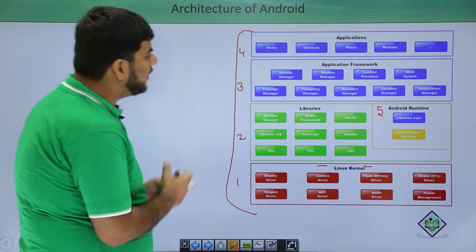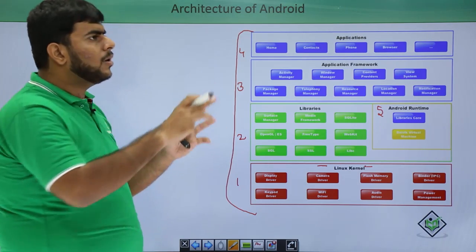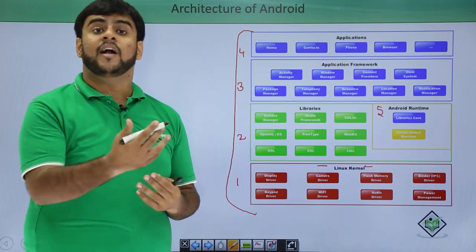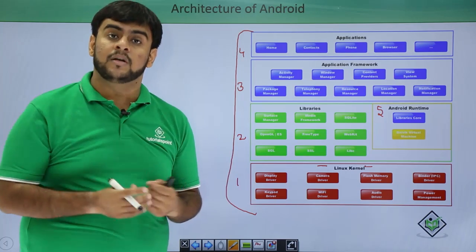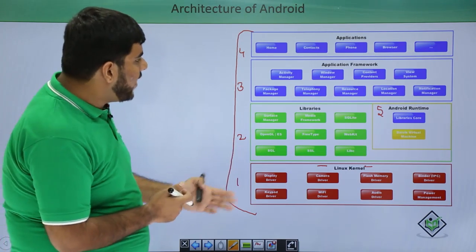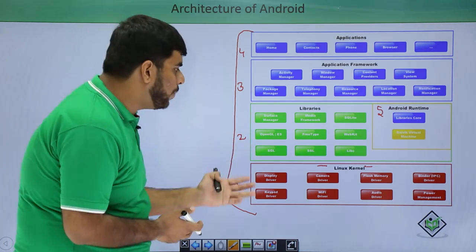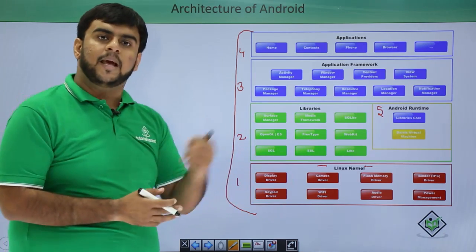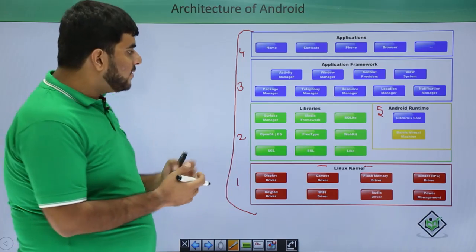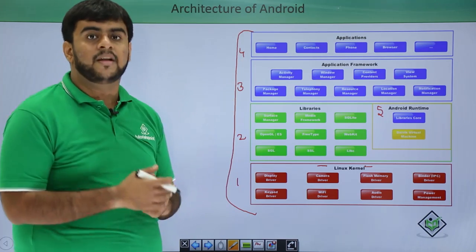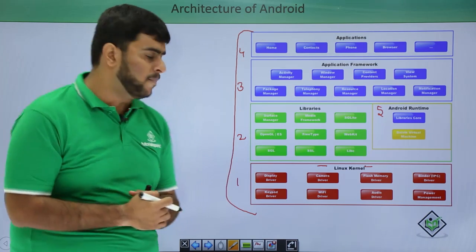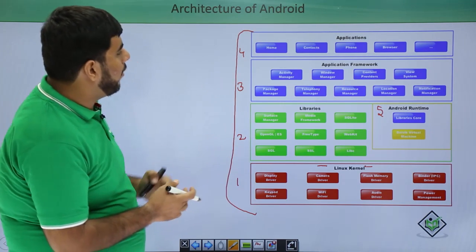After the kernel, we have libraries. Libraries are nothing but some logical group of instructions that we give to the kernel to perform an action. Like we have a SQLite library, an OpenGL library, an SSL library — these are all libraries. Libraries can be C/C++ libraries or even Java libraries (.jar) as well.